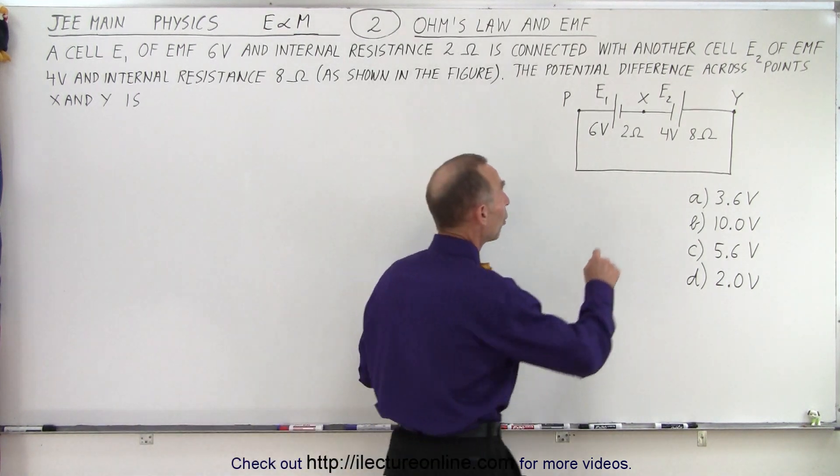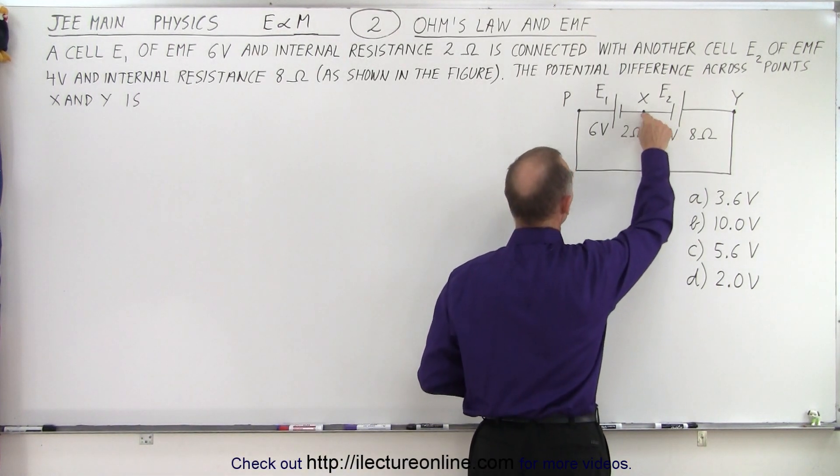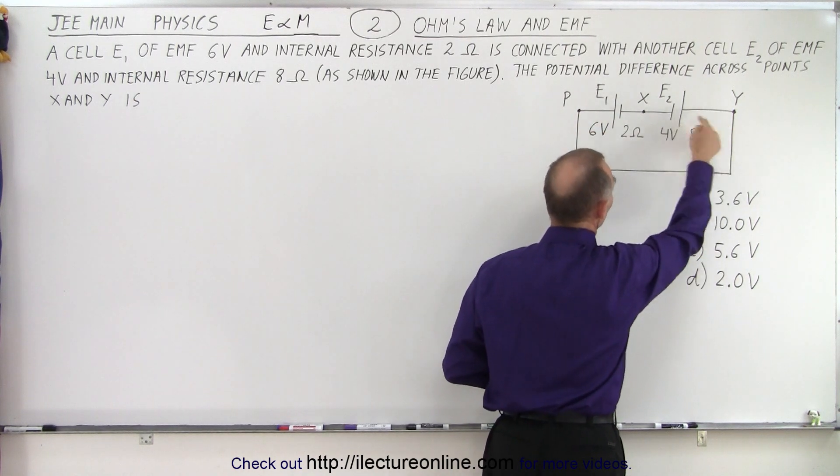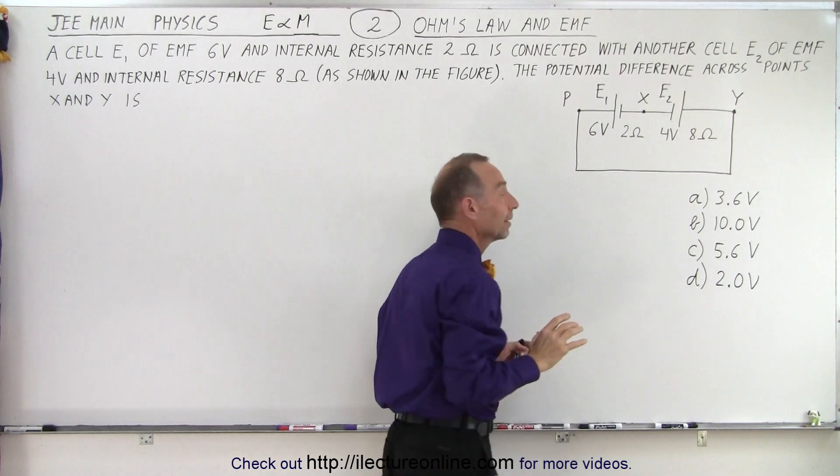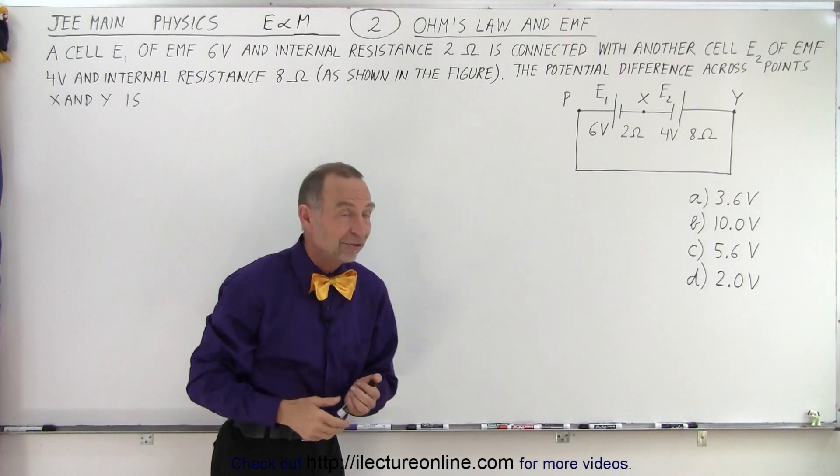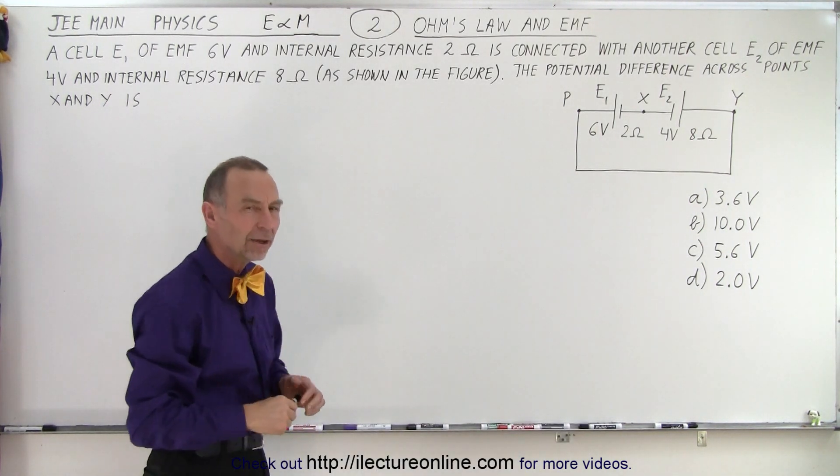So essentially what they're asking is what is the potential difference going from x to y. And of course it doesn't matter if you go around this way or if you go around that way, either way the potential difference would have to be the same. So how do you figure that out?